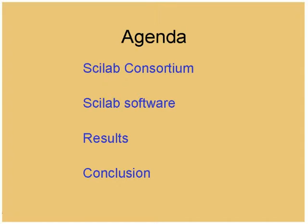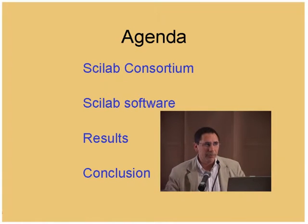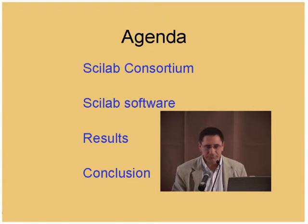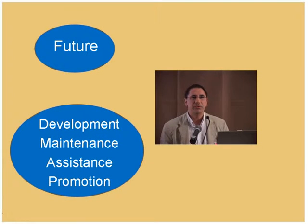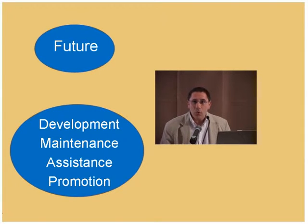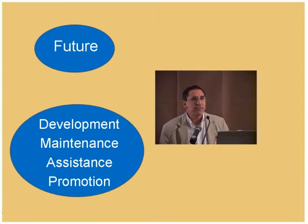I will speak about the Scilab consortium, the structure around Scilab, very briefly, because my colleague will speak more about it. The problem is that we need to ensure a future for the consortium. A consortium cannot rely only on a few people in a research institute. What people want is to know who is developing the software, whether there is maintenance, assistance, promotion, and so on.